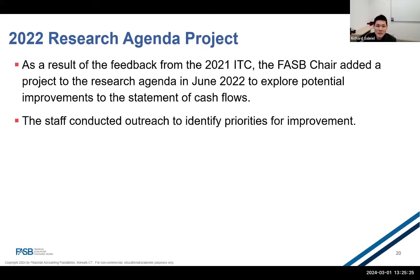As a result of that feedback, the FASB chair added a project to the research agenda in June 2022 to explore potential improvements to the statement of cash flows. The staff began its research and outreach to help understand the level of support for certain potential solutions. Because of the historical challenges with cash flow improvements, a research project was started to ensure feasible paths forward before adding it to the technical agenda. One of the main differences between a research project and a technical project is that a research project needs to work towards a package that meets the agenda criteria: a pervasive need, an identified scope, and a feasible solution.